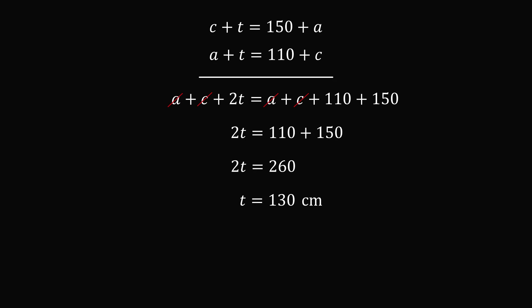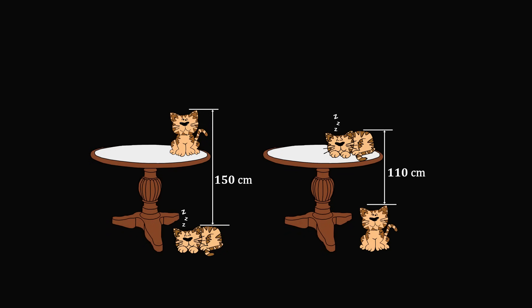We solved the problem in a rather unexpected way. To summarize: we set up two equations with three unknown variables, then found a way to cancel out two of the variables to solve for the one we wanted — the height of the table. This is a challenging problem, suitable for a math competition for 9th and 10th graders. But it got me thinking: is there any other way to solve this? Is there a visual, outside-the-box solution?